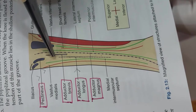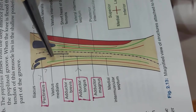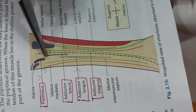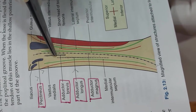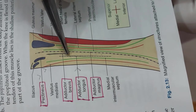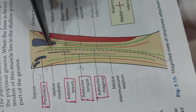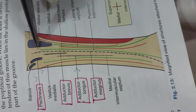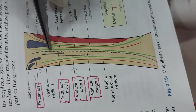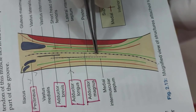The adductor brevis muscle is inserted behind the pectineus and adductor longus, into the line extending from the lesser trochanter up to the linea aspera. The adductor magnus has a wide insertion extending from the medial margin of the gluteal tuberosity onto the linea aspera.